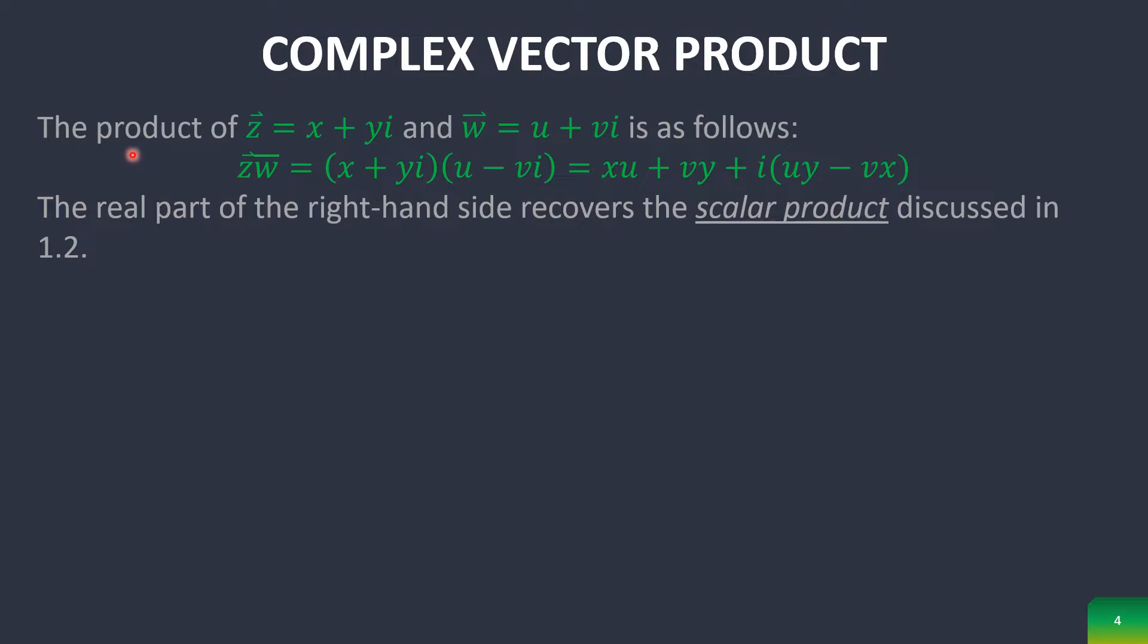Now going to complex vector products, which is not just squaring z or taking the conjugate of z. So doing any product between two complex numbers, you have to have a conjugate of the second number.